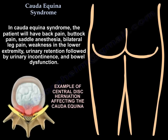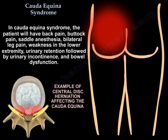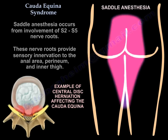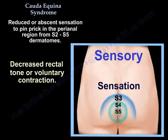In Cauda Equina syndrome, the patient will have back pain, buttock pain, saddle anesthesia, bilateral leg pain, weakness in the lower extremity, urinary retention followed by urinary incontinence, and bowel dysfunction. Saddle anesthesia occurs from involvement of S2 to S5 nerve roots. These nerve roots provide sensory innervation to the anal area, the perineum, and the inner thigh. You will find reduced or absent sensation to pinprick in the perianal region from S2 to S5 dermatomes, and decreased rectal tone or voluntary contraction.